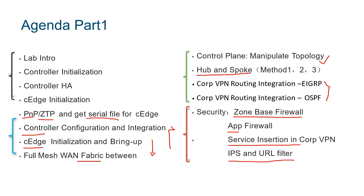Our C-Edge also integrates IPS and URL filtering features. In our corporate scenario, we don't want employees to shop, chat, or play games during work hours. We can block access to such websites using URL filtering. Cisco's backend Talos team has categorized global websites, and we can use these categories for URL filtering. This is the general content of the first part.